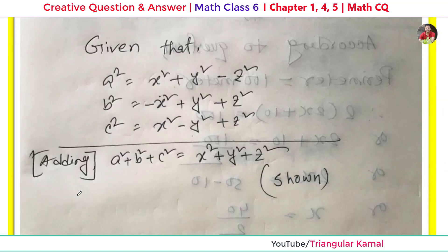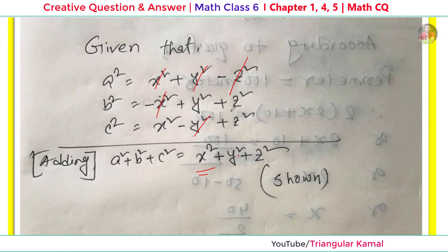For question 4c, the values of a², b², and c² are given. We need to show that a² + b² + c² = x² + y² + z². Adding the expressions: x² terms and −x² cancel, y² terms and −y² cancel, and z² terms and −z² cancel, leaving x² + y² + z². Therefore, a² + b² + c² = x² + y² + z². Proved.